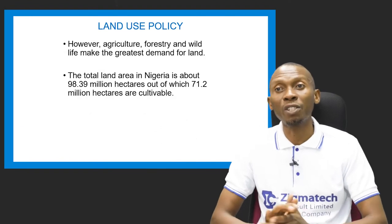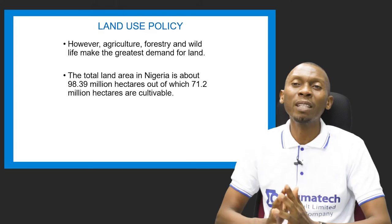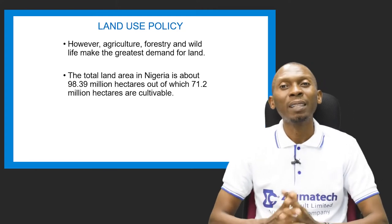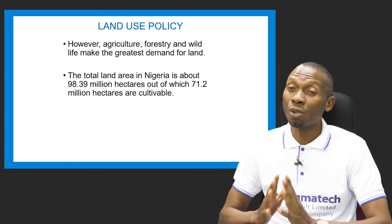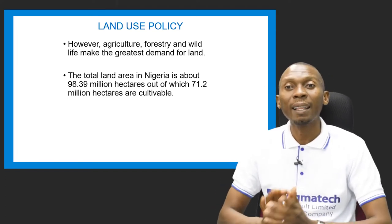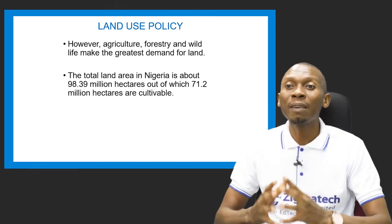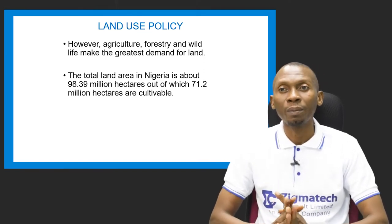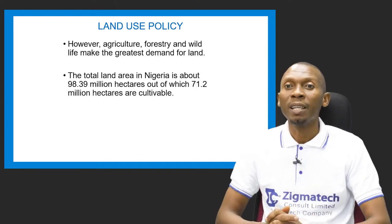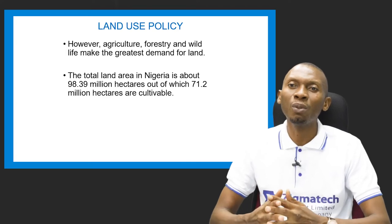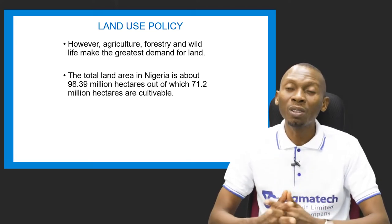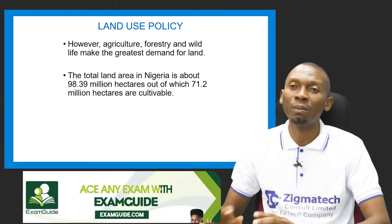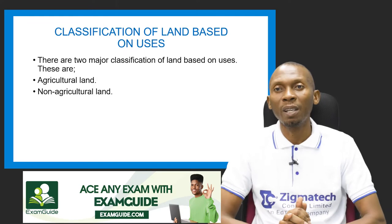Agriculture, forestry, and wildlife make the greatest demand on land. In Nigeria, the total land area is about 98.39 million hectares, out of which about 71.2 million hectares are cultivable — enough to feed the population adequately.